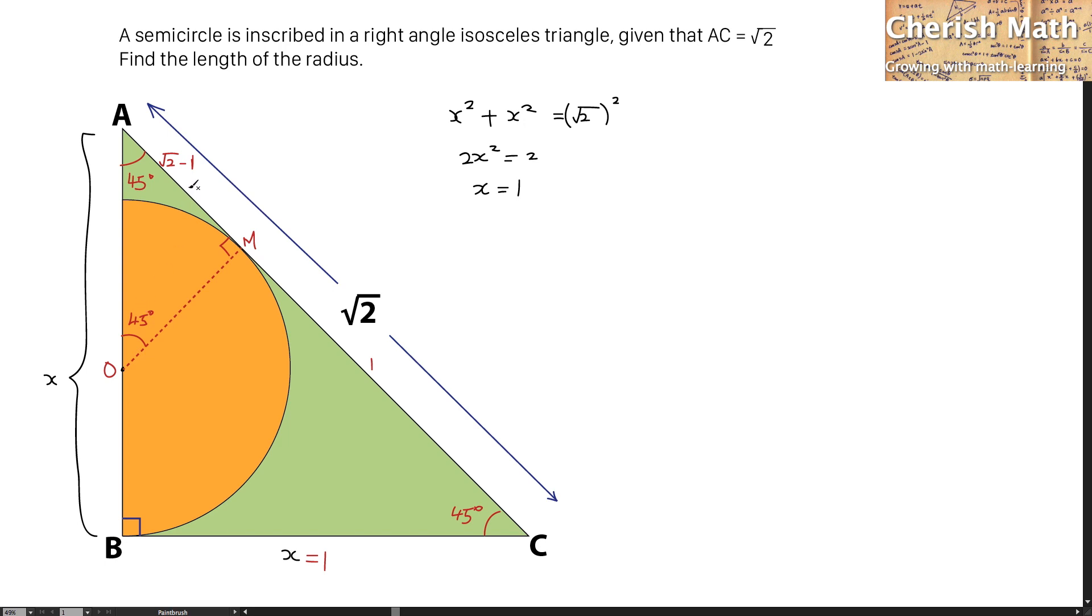That shows that it is another isosceles triangle. So, since for the part AM is the square root of 2 minus 1, then for the part OM would be the same as the square root of 2 minus 1. And this is the length of the radius.